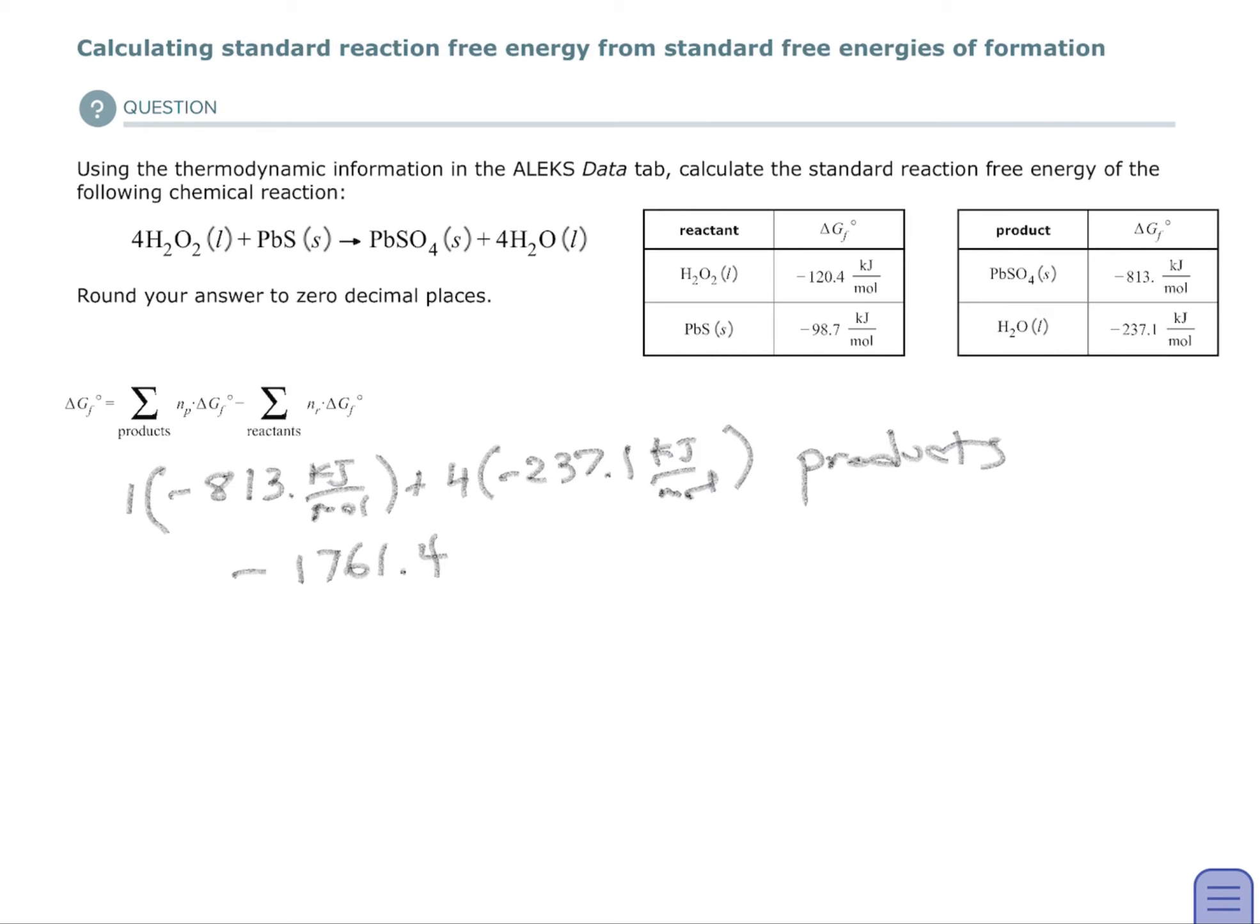So I'm going to do the products first. So I have the 813, which is the lead sulfate, and that's negative 813 kilojoules per mole. Then I have four moles of the water, each at negative 237.1 kilojoules. Add those together, and I get an answer. That's in kilojoules.